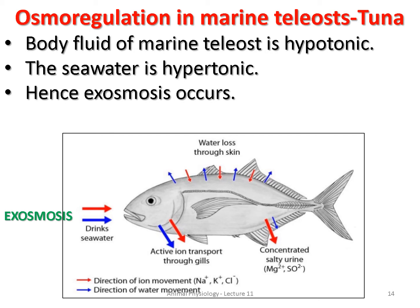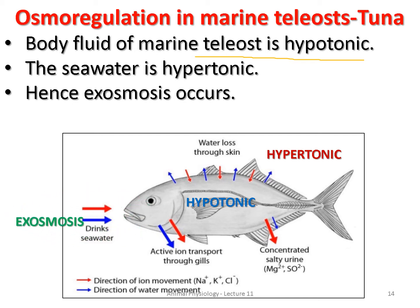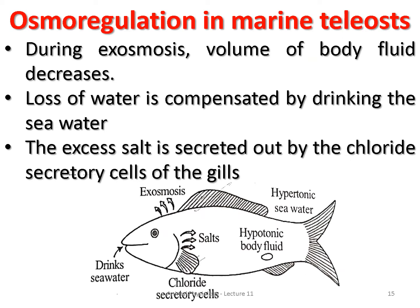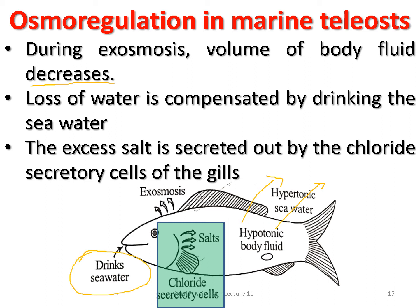In marine teleosts it is just the opposite. The marine teleost is hypotonic and the seawater is hypertonic, so exosmosis occurs — water moves outside. The volume of body fluid decreases because more water is going out. To compensate for this lost water, the fish drinks a lot of seawater. However, drinking more seawater leads to excess salt, and this excess salt is secreted out by the chloride secretory cells.